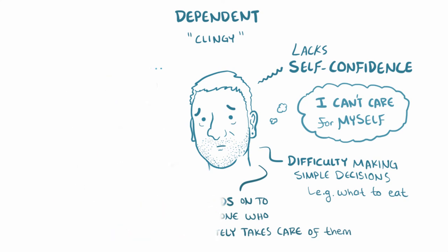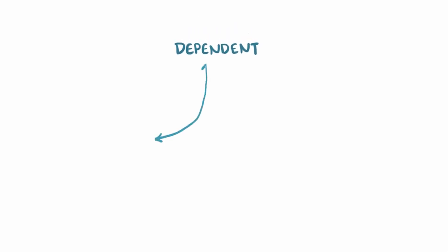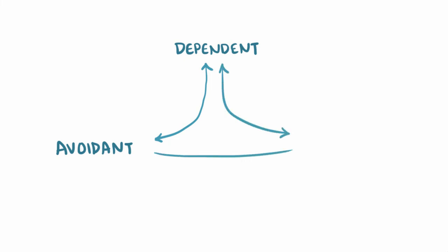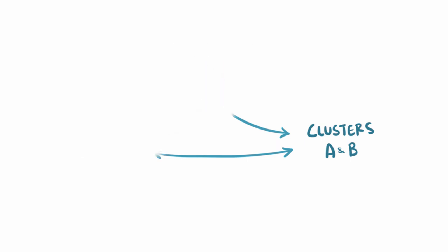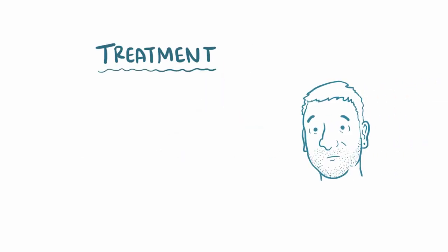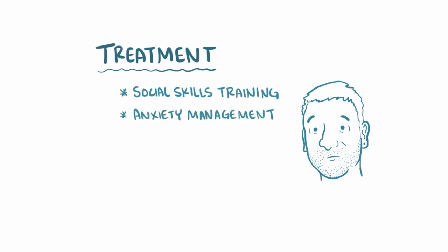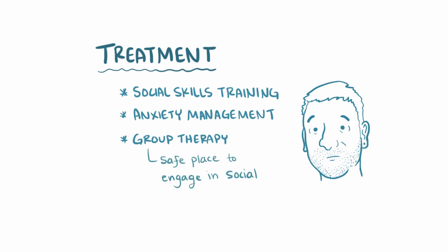There is considerable overlap between diagnostic categories for the personality disorders. For example, people with dependent personality disorder often meet the diagnostic criteria for avoidant personality disorder, and there's also overlap with personality disorders in clusters A and B as well. Treatment for cluster C personality disorders typically includes social skills training and anxiety management. Group therapy can be particularly helpful as well, since it provides a safe place through which they can practice engaging in different social interactions.